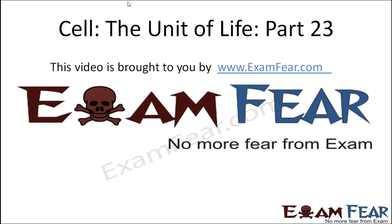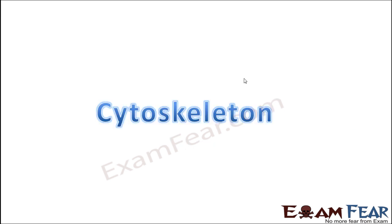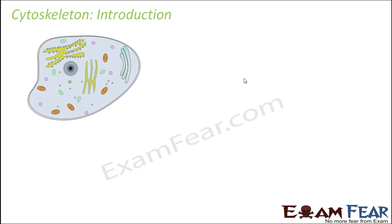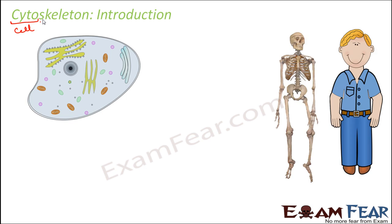This video on cell the unit of life part 23 is brought to you by examfear.com. Let us now talk about cytoskeleton. Cyto means cell, and skeleton is the basic framework of the body. Does a cell also have a skeleton? Yes, of course. Just as the human skeleton forms the basic framework on which everything is arranged, similarly inside the cell there is also a skeleton.